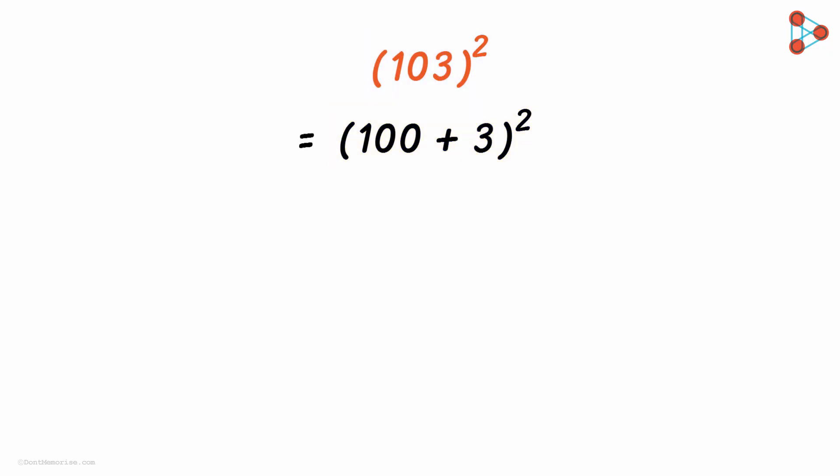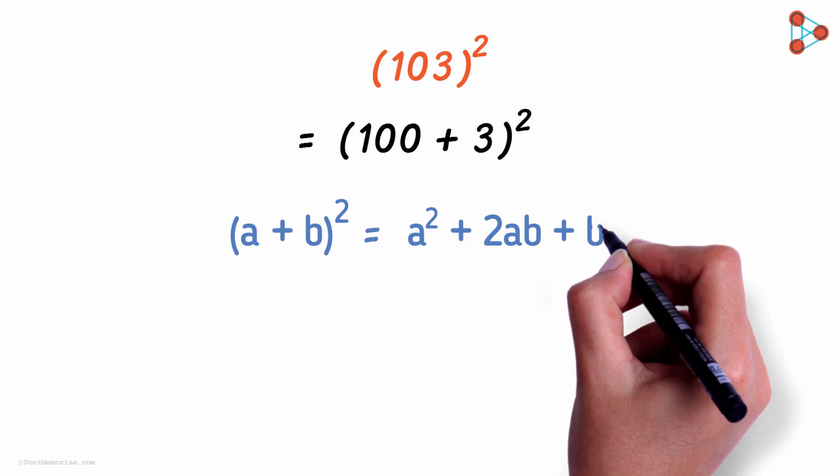Now we all know the formula of a plus b the whole squared, right? Can you tell me what it is? Yes, it's a squared plus 2ab plus b squared.